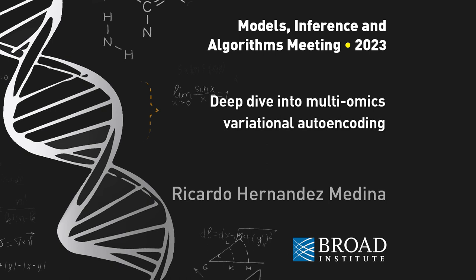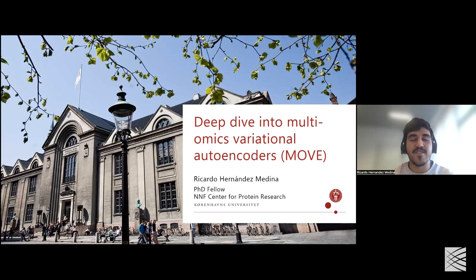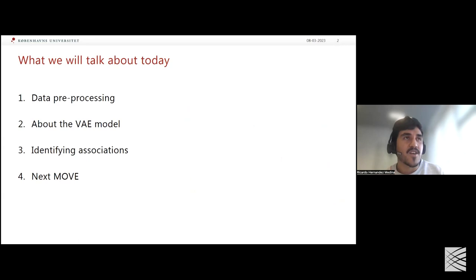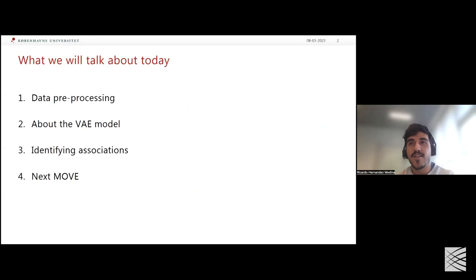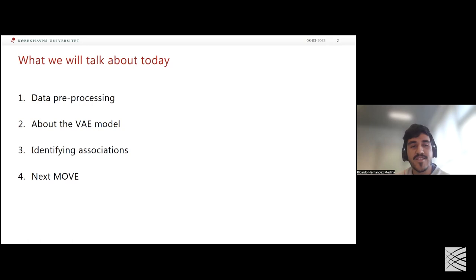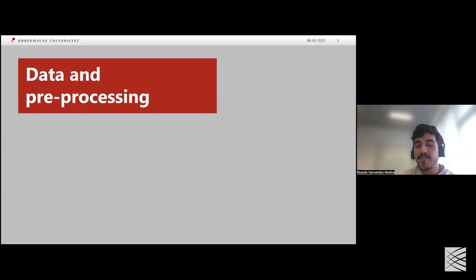Hello everybody. Today I will go into detail on our MOOP pipeline — Multi-Omics variational autoencoders — presented earlier by Simon. I'll cover four sections: the data and its pre-processing, the VAE model architecture, the method for identifying associations through thought experiments, and finally the latest improvements and planned future work. We work with the DIRECT dataset.